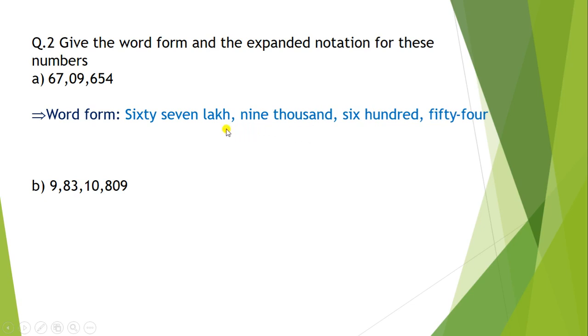Can you write the expanded form? Correct. The expanded form for this number is 60,00,000 plus 7,00,000 plus 0 plus 9,000 plus 600 plus 50 plus 4.